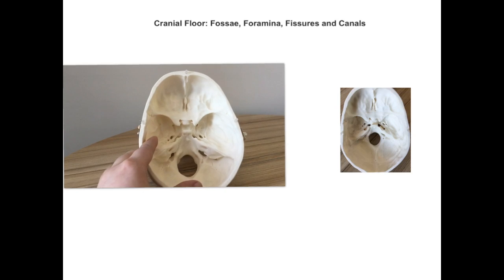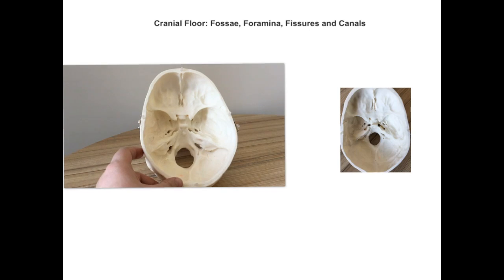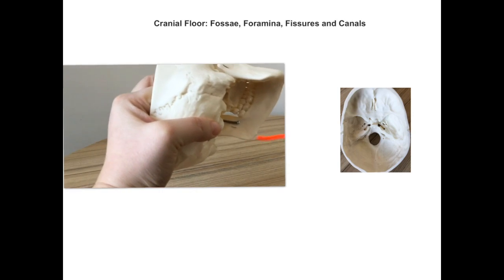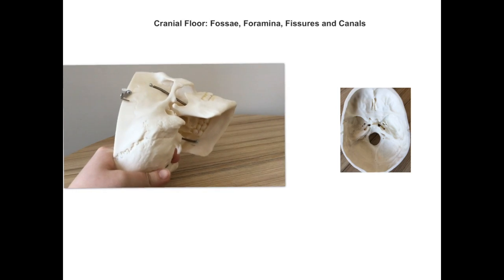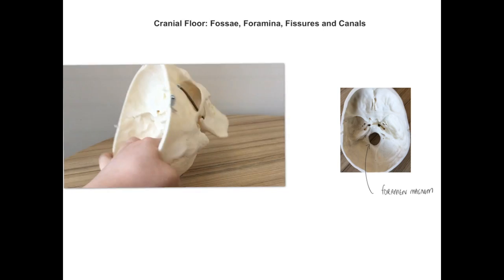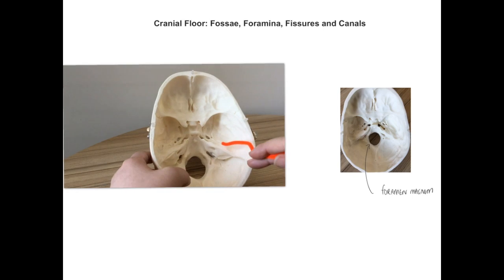Moving to the posterior cranial fossa, the most prominent feature is the foramen magnum, which transmits the spinal cord — the brainstem continues through the foramen magnum as the spinal cord. Coming to the petrous bone, this part of the temporal bone forms part of both the middle and posterior cranial fossae.